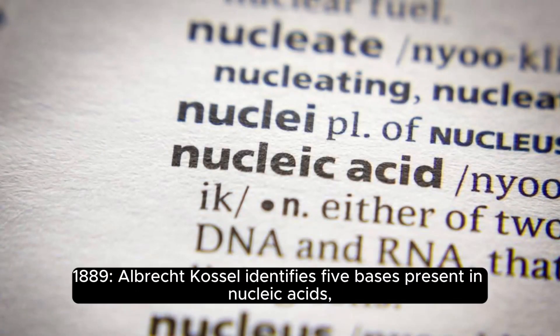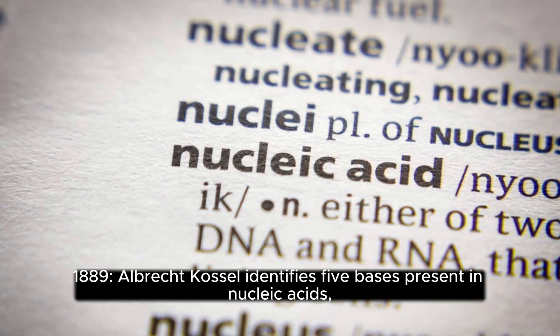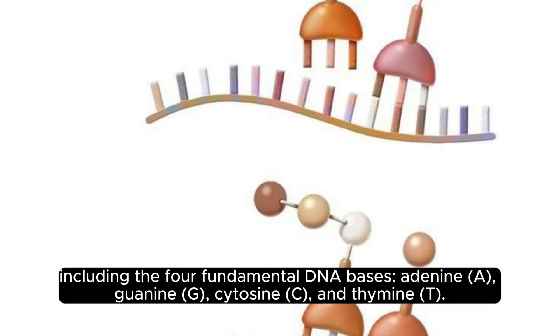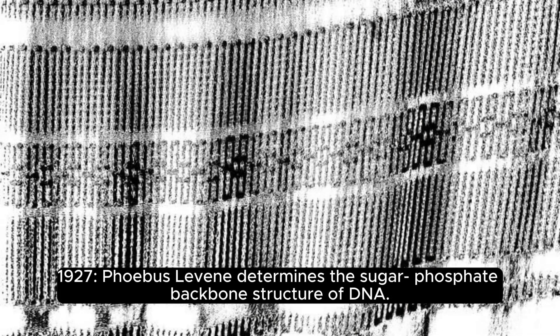1889: Albrecht Kossel identifies five bases present in nucleic acids, including the four fundamental DNA bases — adenine (A), guanine (G), cytosine (C), and thymine (T). 1927: Phoebus Levine determines the sugar-phosphate backbone structure of DNA.